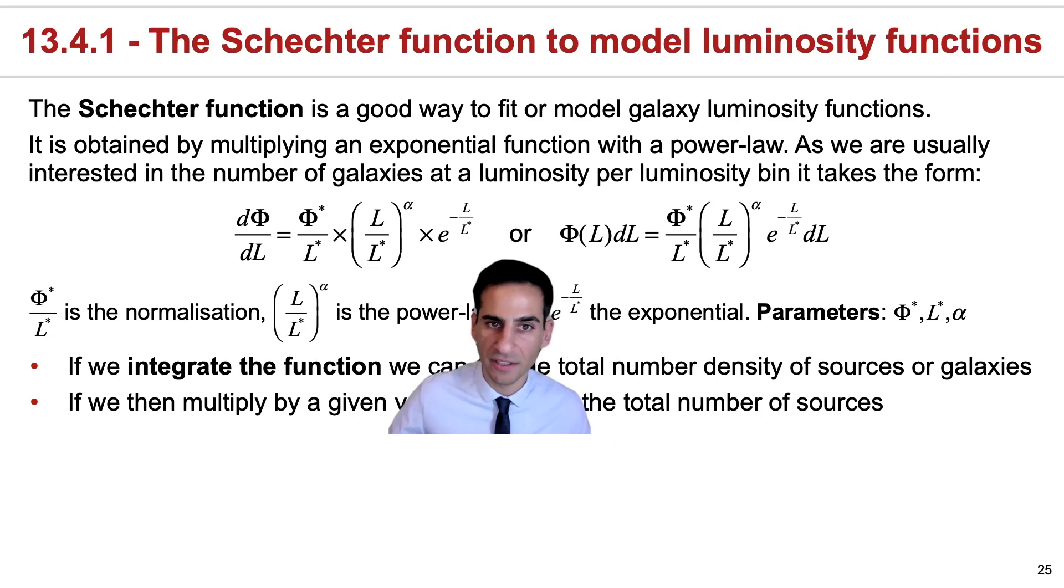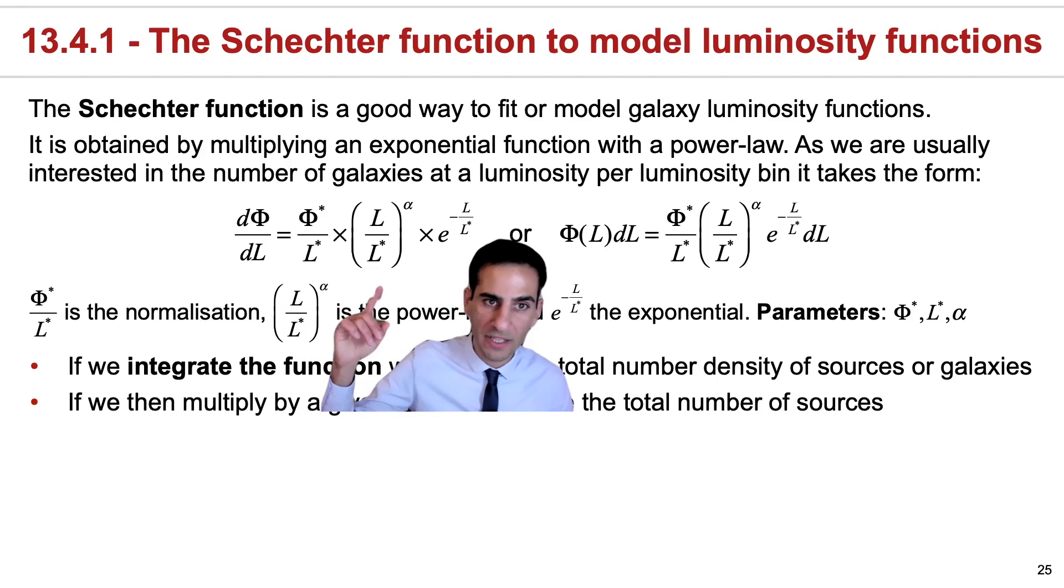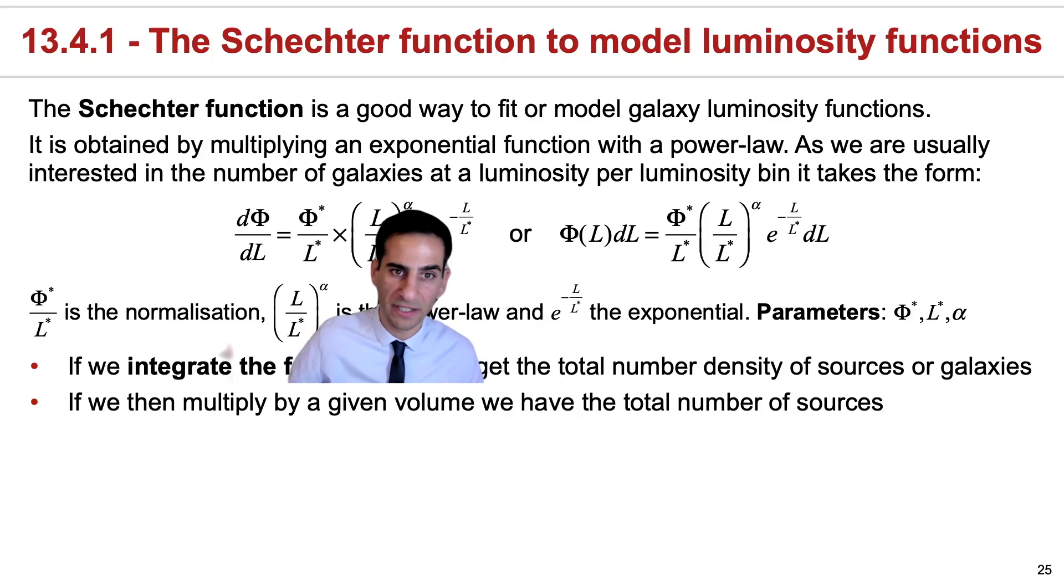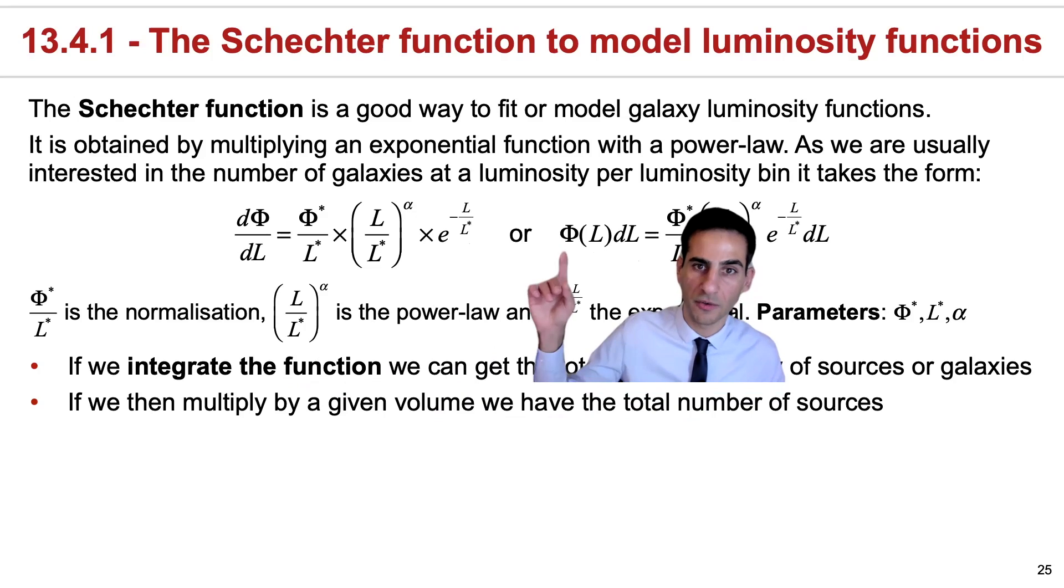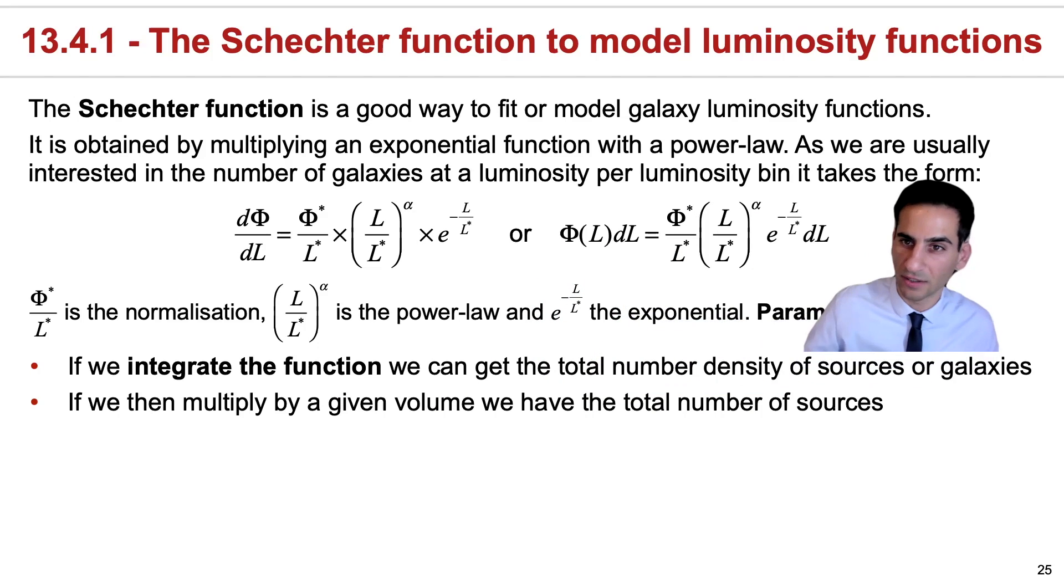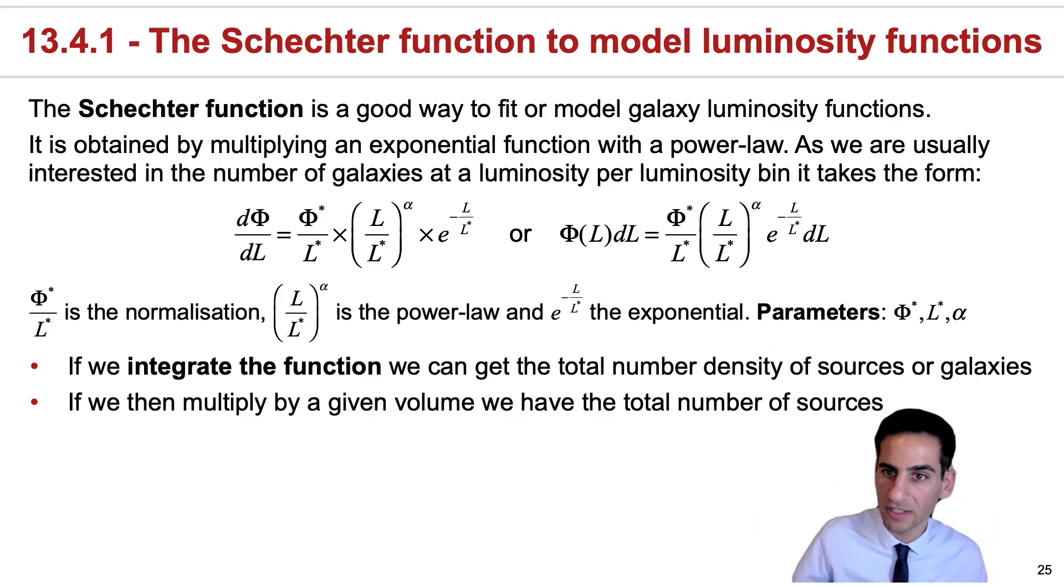You can write it essentially in two forms. The reason why you can find this in the differential form is because the Schechter function is modeling the relative number density of galaxies for each bin or range of luminosity. That is why we indicate and we look at d phi dL, or if you want to write it in this form, phi times dL, and you get the dL to the other side.